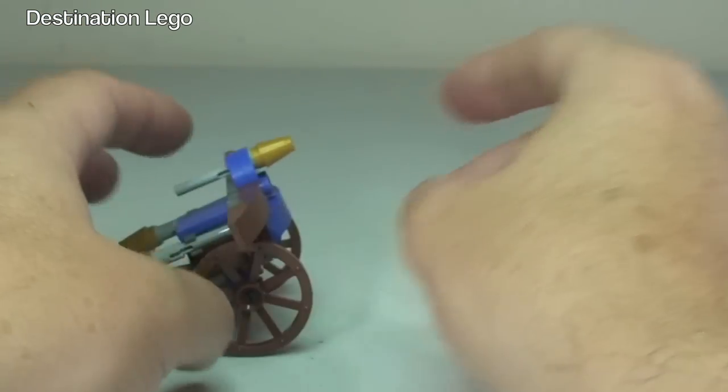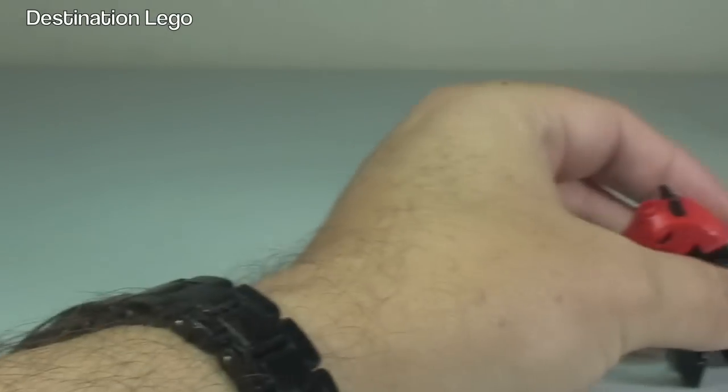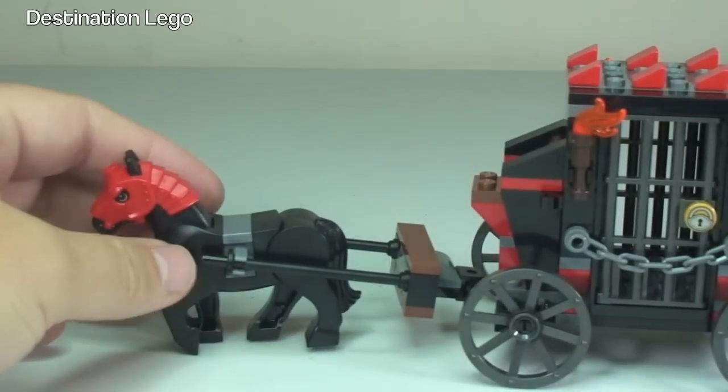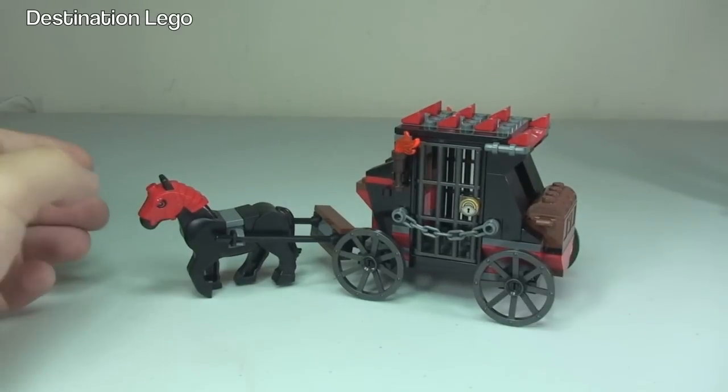Obviously put that back into position like that. That moves along quite nicely, so that is our large crossbow. Next up and what is the main feature of this set and is pretty cool, is the horse and carriage which we can now see there in front.